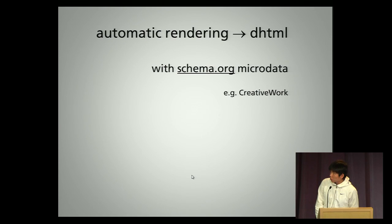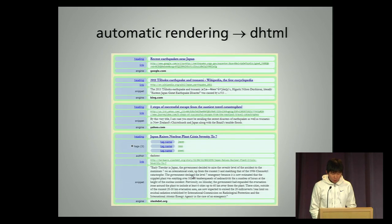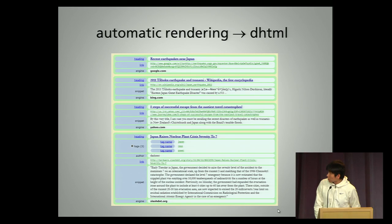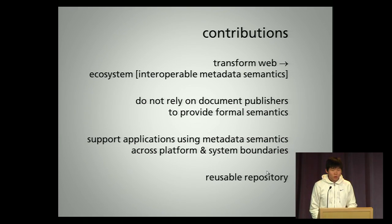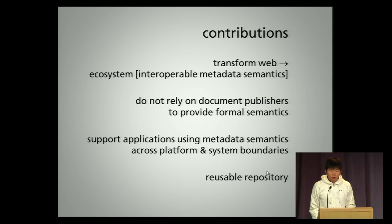Those objects can also be serialized into different forms, like XML or JSON, and transferred through a network or other medium, and deserialized in another system or language. So the semantics can transfer across system boundaries. You can also render them into HTML with microdata embedded. Here shows an example of the rendered HTML in which search results from different engines are integrated together.